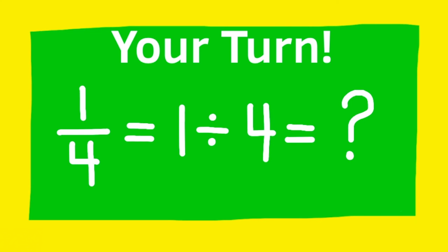Okay, now it's your turn to be challenged. 1 fourth is equivalent to 1 divided by what number? 4. 1 fourth equals 1 divided by 4. And what is the decimal value of 1 divided by 4?